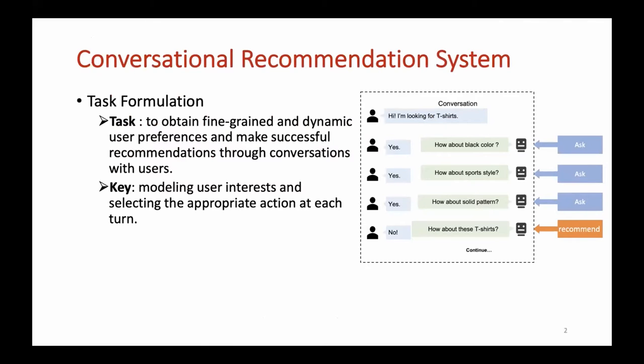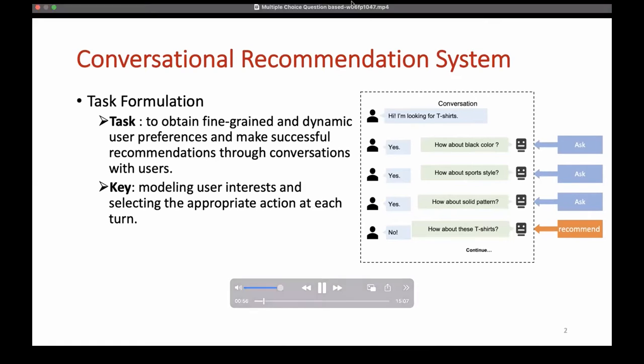Recently, conversational recommendation system has attracted greater attention. As the example shown in the figure, Conversational Recommendation System is able to obtain fine-grained and dynamic user preferences and make successful recommendations through conversations with users. The system will decide to ask questions about attributes or recommend items in each turn of the conversation, and the keys are modeling user interests and selecting the appropriate action at each turn.